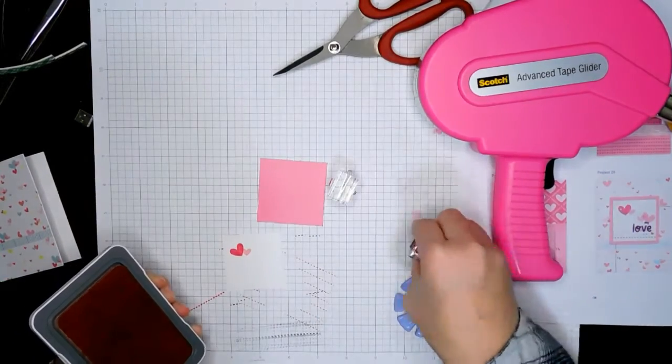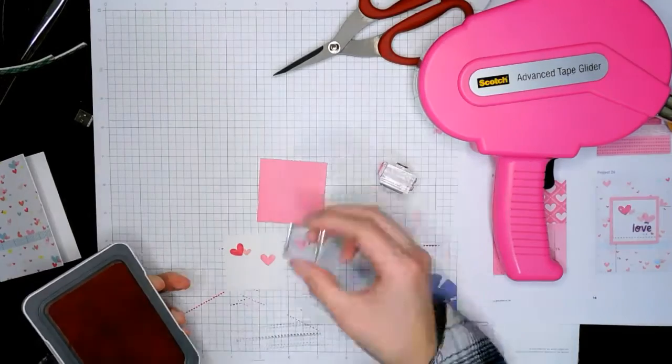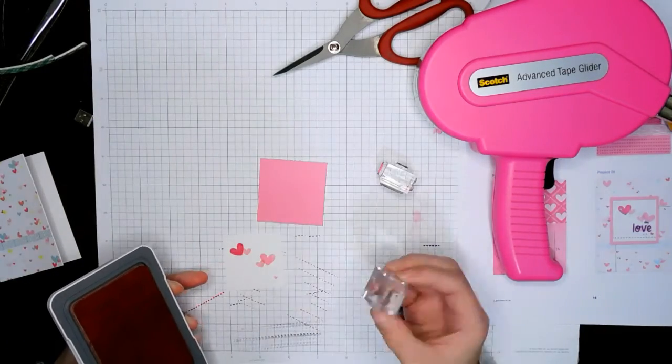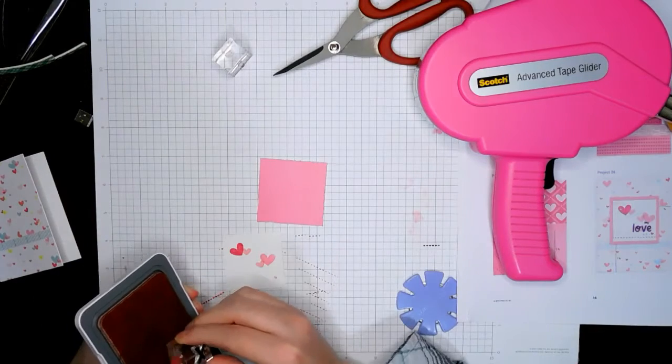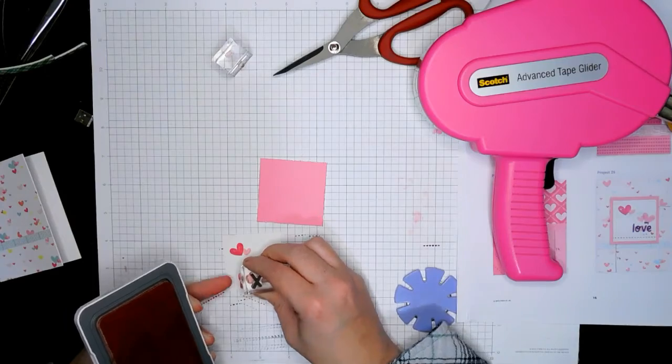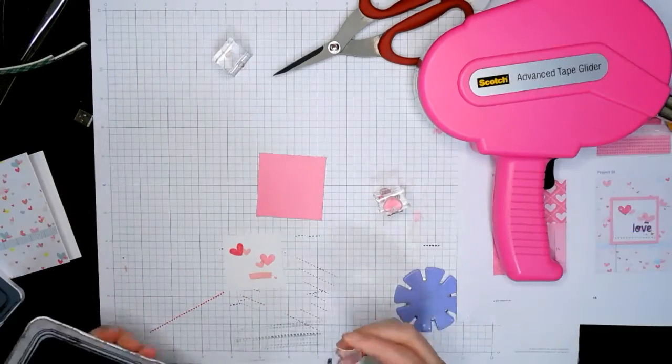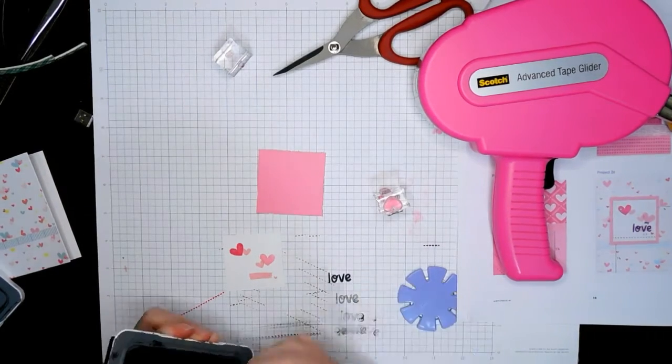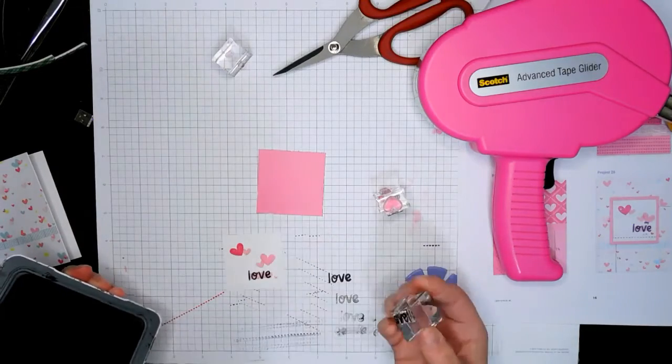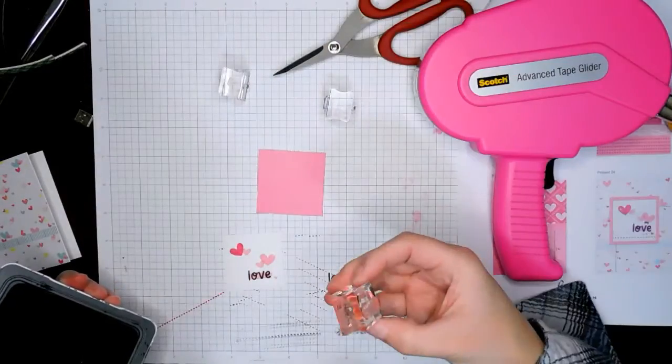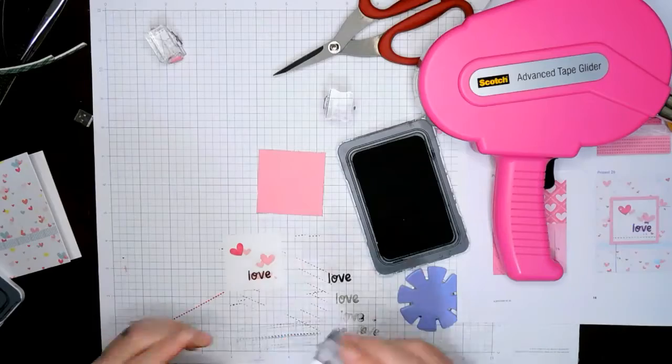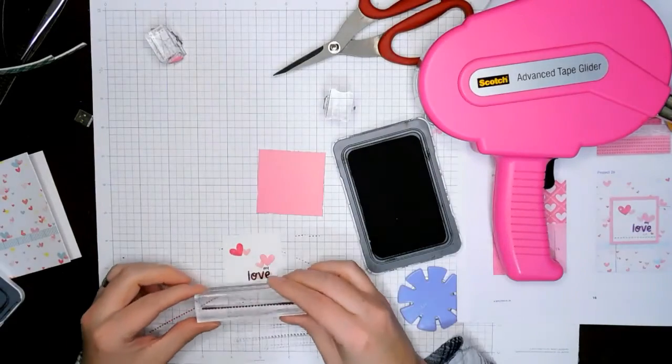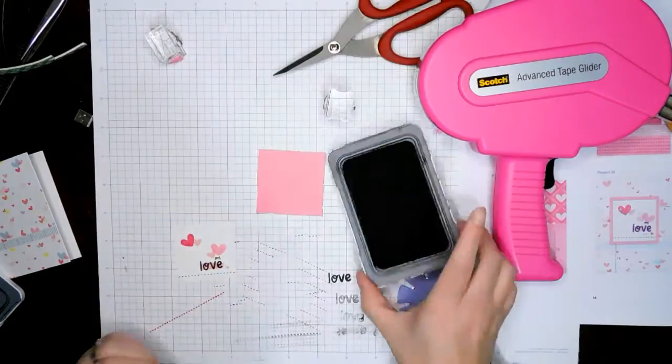I'm adding these little tiny hearts as well. Then I go ahead and add the faux washi stamp and then the word love. Across the bottom I think it has the dashed line stamp that goes with everything. Then I figure out what I want on foam tape.